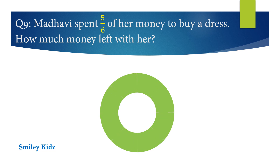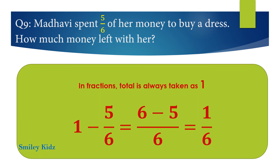And your time is up. The right answer is 1 by 6. In fractions, the total is always taken as 1. So 1 minus 5 by 6 equals 6 minus 5 by 6, which equals 1 by 6.